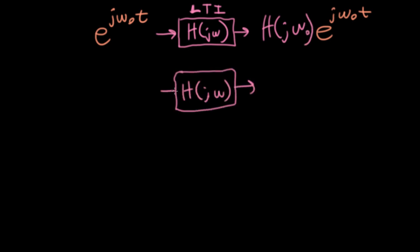We'll think about what happens when we put a real valued sinusoid in the system, which we'll represent as a cosine with frequency omega naught, amplitude A, and phase phi.